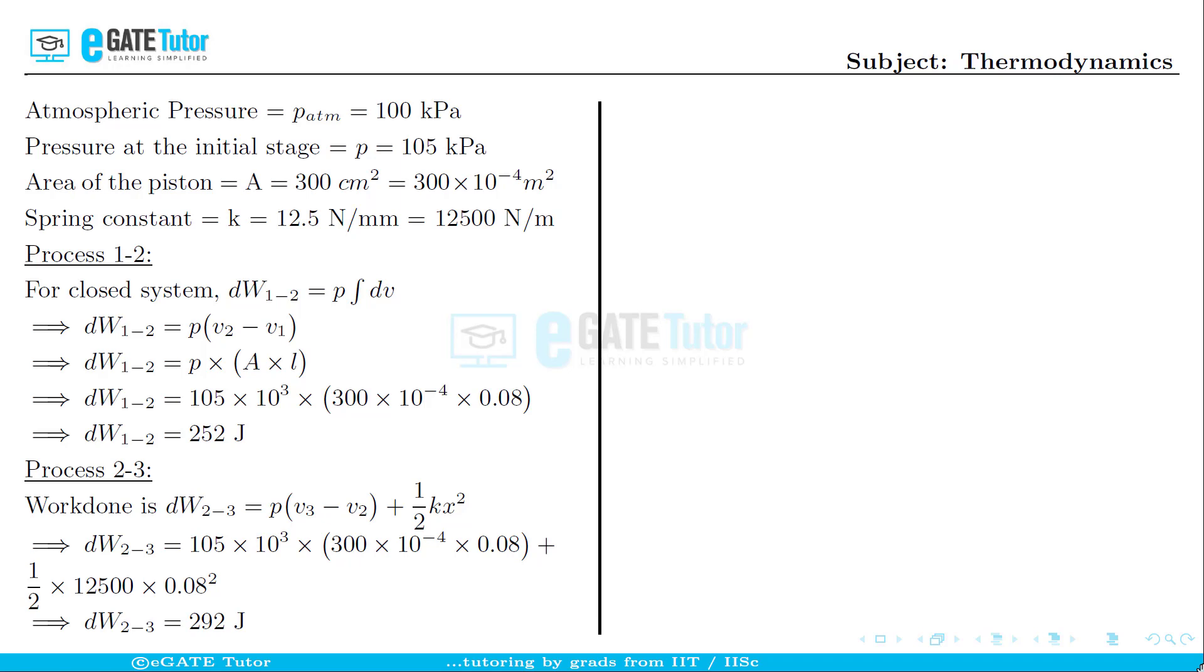Therefore we can calculate the total work done as the sum of work done in the process 1 to 2 plus the sum of the amount of work done in process 2 to 3. So simplifying by substituting the values will give us the total work done as dW = 544 joules.